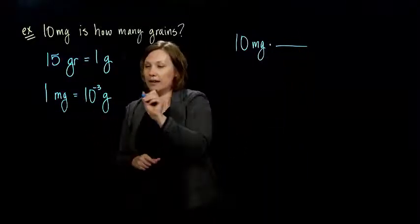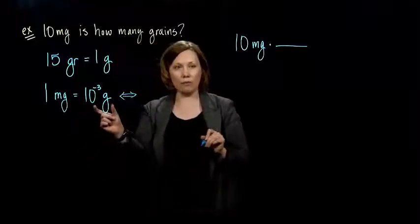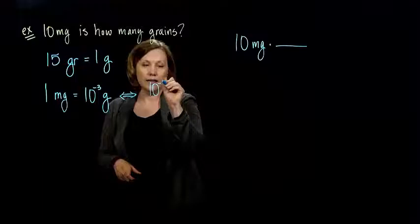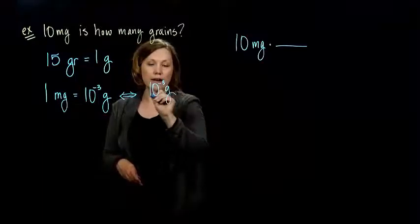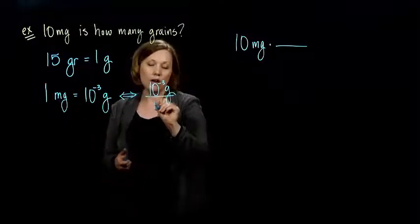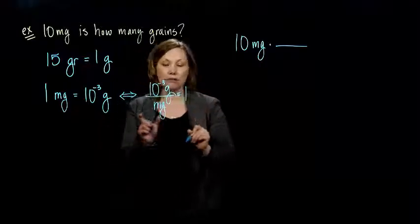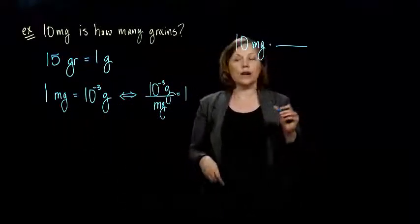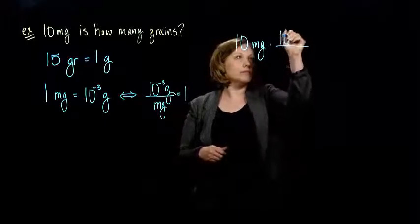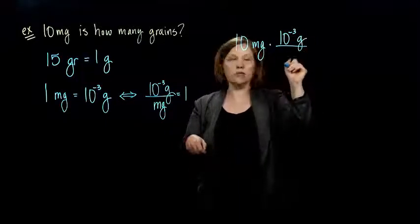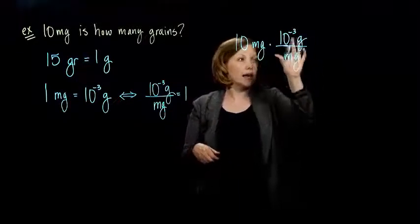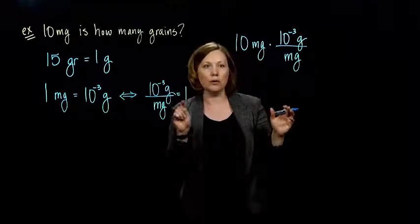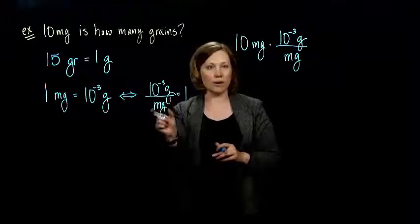So that means I need to divide this on both sides by milligrams. So, I'm going to write it as 10 to the minus 3 grams over 1 milligram or I'm just going to write mg, right? That's the same thing as 1 when I divide this equivalence on both sides. So, I can multiply by that, 10 to the minus 3 grams over milligrams and I can multiply by it and not change the amount I have because remember this is equivalent to 1, right? Because these things represent the same thing.